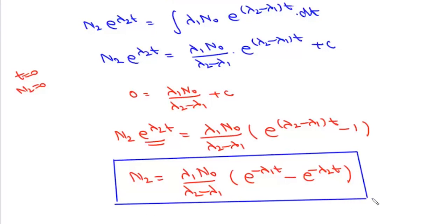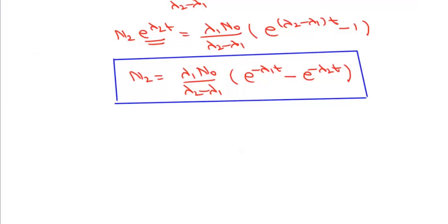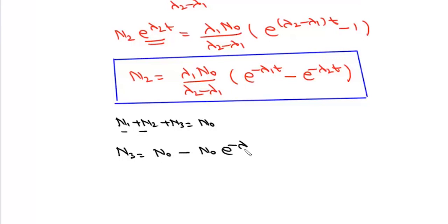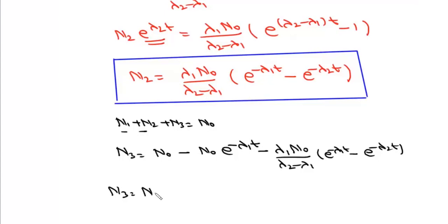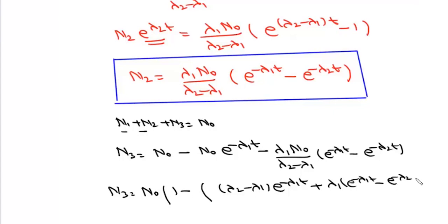Now we find the number of atoms of C at any time. At any point in time, N1 plus N2 plus N3 must equal N0. So N3 equals N0 minus N1 minus N2, where N1 is N0·e to the power minus λ1·T and N2 is λ1·N0/(λ2−λ1) times (e to the power minus λ1·T minus e to the power minus λ2·T).